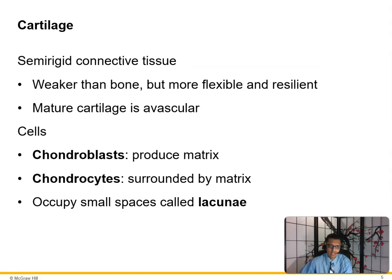Cartilage is semi-rigid connective tissue — weaker than bone but more flexible and resilient. Bone is not as flexible as cartilage. Mature cartilage is avascular, meaning no blood supply. Once a meniscus is torn, there's no way it can repair itself because there's no blood supply.